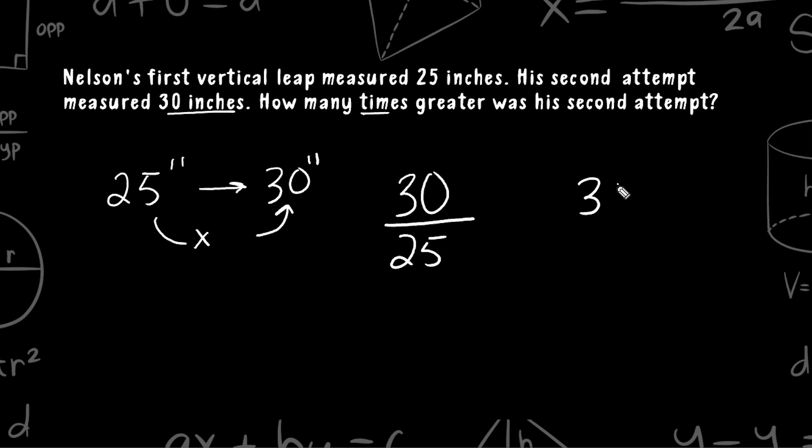We're going to take 30 and divide it by 25. So 25 goes into 30 once. So we're going to take one group of 25 away from 30, which leaves us with 5. Now what we can do is we can express this answer as a mixed number. So we can say his second attempt was 1 and 5 25ths greater than his first attempt.